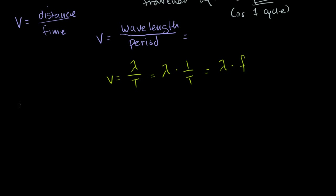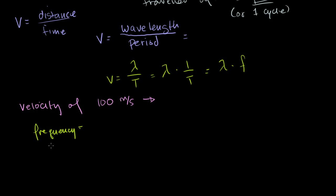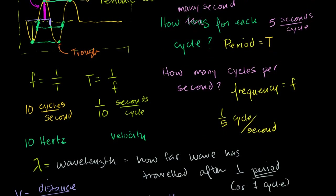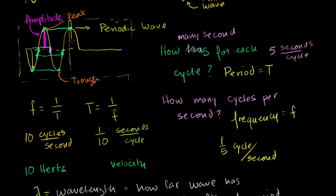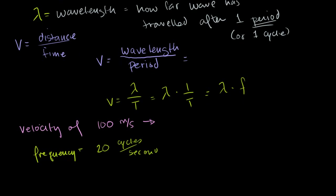For example, if someone tells you that the velocity is 100 meters per second to the right, and the frequency is 20 cycles per second — which is the same as 20 hertz — then in one second you would see a fixed point on the string go up and down 20 times. That's what we mean by the frequency being 20 hertz, or 20 cycles per second.